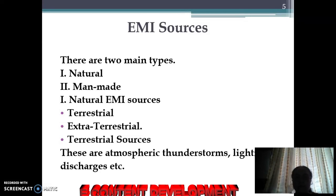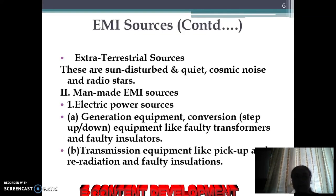The terrestrial sources can be thunderstorms, lightning discharges, etc. Some of the extraterrestrial sources are the sun — both disturbed and quiet — and cosmic noise from the stars.